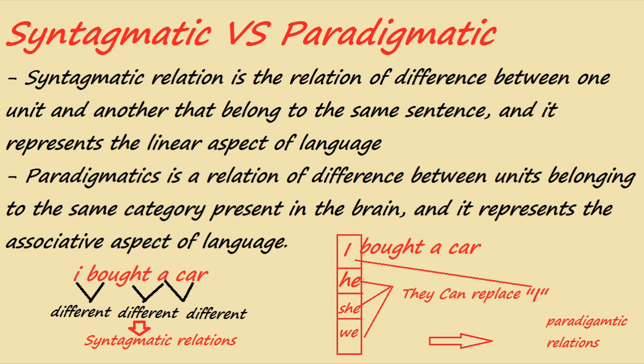All these words are different from 'I' but they belong to the same category — subjects that can be used in a sentence. You can do the same with predicates or verbs: in 'I bought a car,' you look in your mind for all the words that can replace the verb 'bought' — for example, 'I destroyed a car,' 'I borrowed a car.' This is what syntagmatic and paradigmatic relations are about.